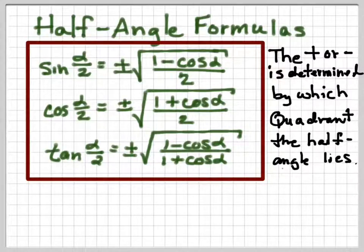So if your half angle lies in the first quadrant, then everything will be positive. If your half angle lies in the second quadrant, only the sine will be positive.